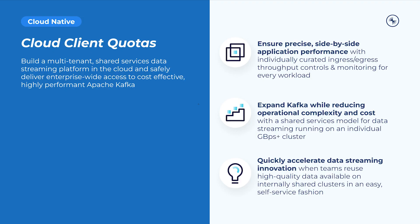The next feature supporting our secure shared services data streaming platform theme is Cloud Client Quotas from the Cloud Native pillar. Centralized platform teams at large enterprises often struggle to optimize application resource allocation, performance degradation, and much more, especially in a multi-tenant model where infrastructure resources are shared across applications. With Cloud Client Quotas now available on Confluent Cloud, enterprises can build a multi-tenant shared services data streaming platform and safely deliver enterprise-wide, cost-effective access to Apache Kafka. They can ensure precise side-by-side application performance with individually curated ingress/egress throughput controls and monitoring for every workload, expand Kafka while reducing operational complexity and cost with a shared services model running on an individual gigabytes-per-second-plus cluster, and quickly accelerate data streaming innovation by reusing high-quality data on internally shared clusters in an easy self-service fashion.